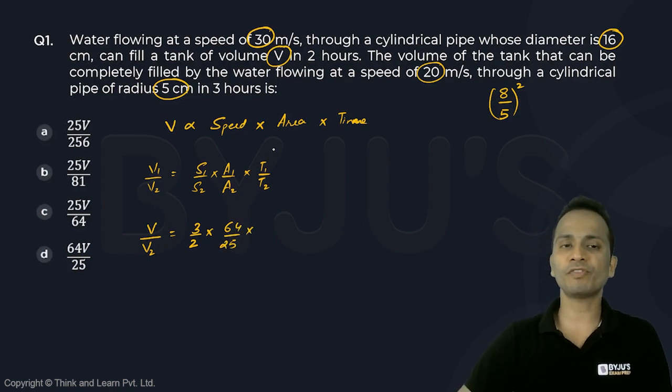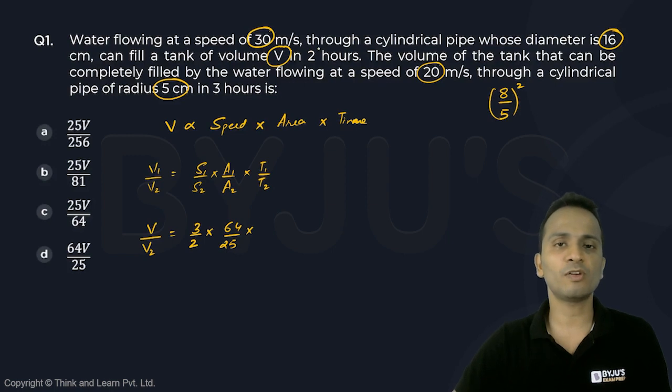And the ratio of time: first it was 2 hours, second it was 3 hours, so the ratio of time is 2 upon 3.